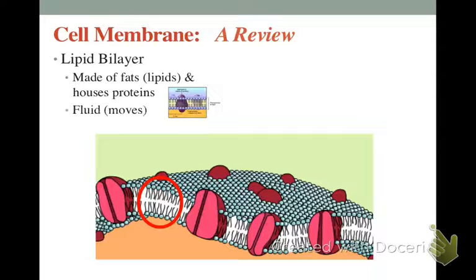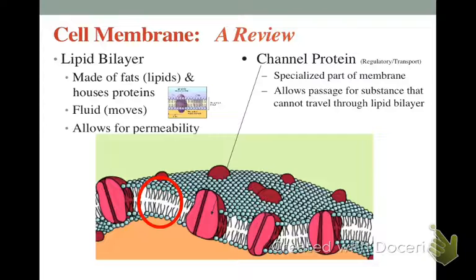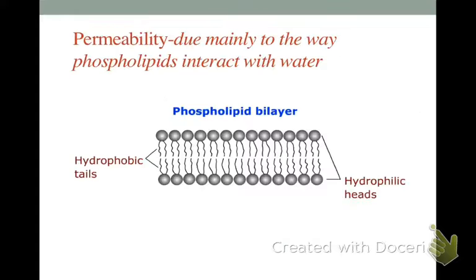The membrane is made of fats and proteins. It's fluid, which means it moves. You're going to see a video of it moving in a second. It allows for permeability - permeability means things are able to enter and exit the cell membrane. They're made of protein channels, which allow substances to pass through that might be too big or need help. Also, this lesson is being recorded and will be on my website if you need to review it before your quiz.